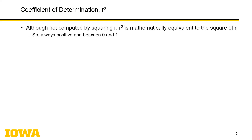Now we're moving on to the coefficient of determination, r-squared. It's called r-squared because if you square r, you will get this thing called r-squared — it is mathematically equivalent to the square of r. But since it's squared, it can't go negative, so it's always positive and between 0 and 1.